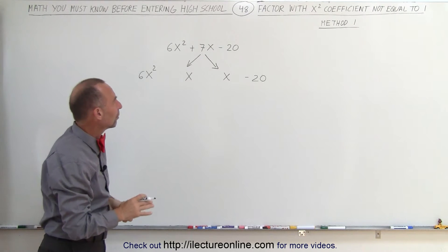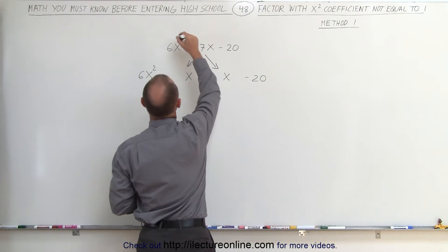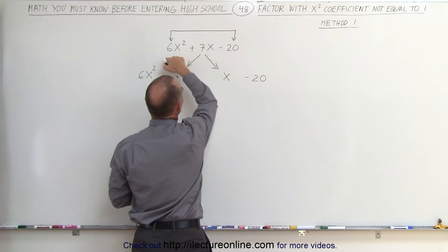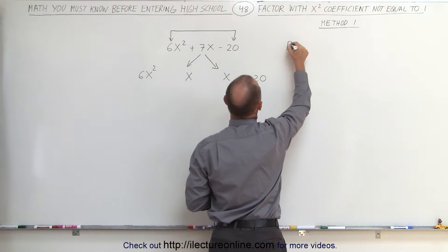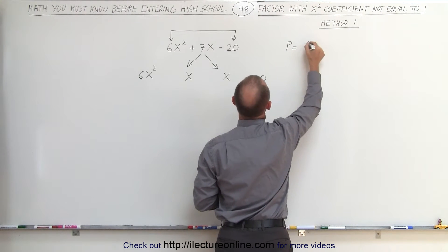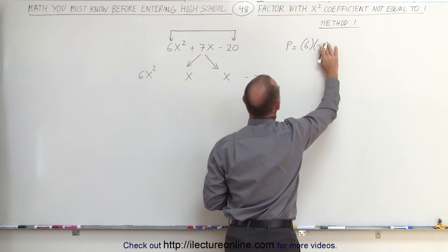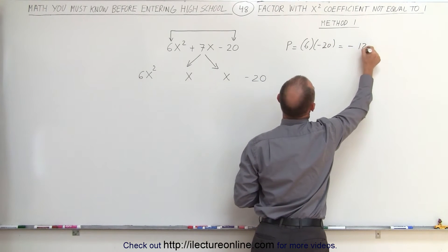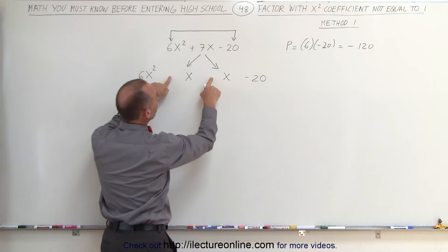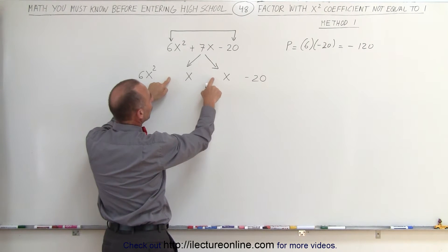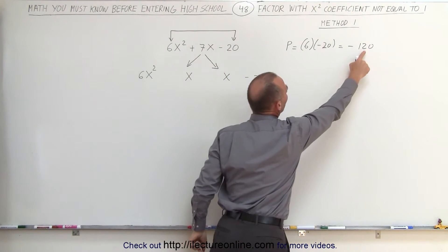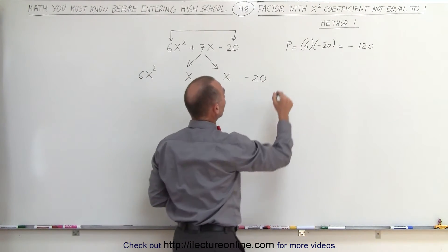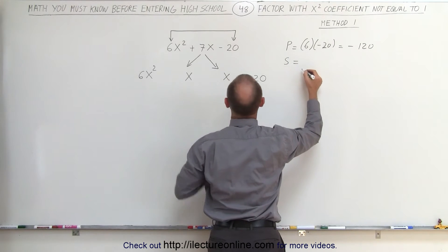The way to determine those two numbers is to take the 6 and the 20 and multiply them together. The product is 6 times minus 20, which equals minus 120. Whatever these two numbers are, their product must be minus 120 — obtained by multiplying the first and last coefficients together. And their sum must equal 7.